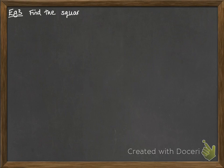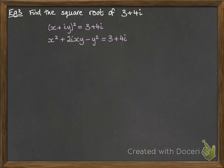Okay, third example. We're going to find the square root of 3 plus 4i. So, we have some number that's been squared to make 3 plus 4i. So, if we multiply out that bracket, this is what we get. Now, we're going to equate the real and the imaginary parts here.